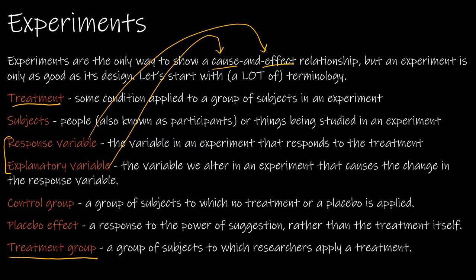The control group is the group of subjects to which no treatment or a placebo is applied. A placebo is given to subjects in the control group who typically don't know they're the control group, because we want to remove the aspect of our minds telling us something is working or not working. The placebo effect is a response to the power of suggestion rather than the treatment itself. For instance, if I'm given a sugar pill to look like real medication, I might say I feel better — that's the placebo effect. It's not the pill making you feel better; it's the belief that it will.